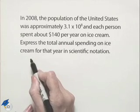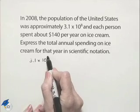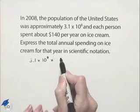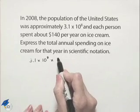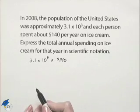We're simply going to take the number of people, 3.1 times 10 to the eighth, and multiply times the cost per person, which was $140 per year.